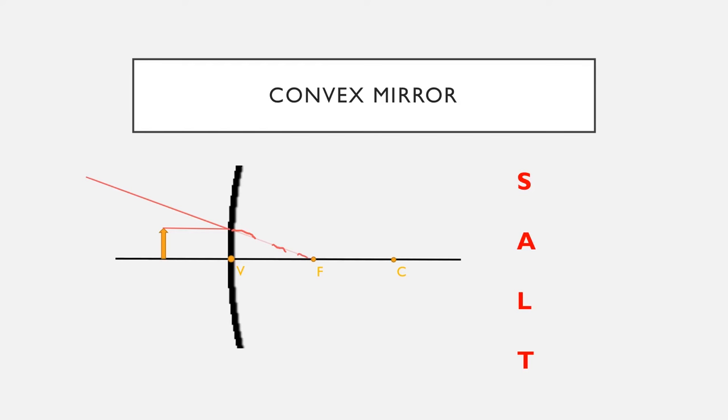So again, if you remember that whenever you cross the mirror, you should create a dotted line. So I'm going to just start off with this faint line here.